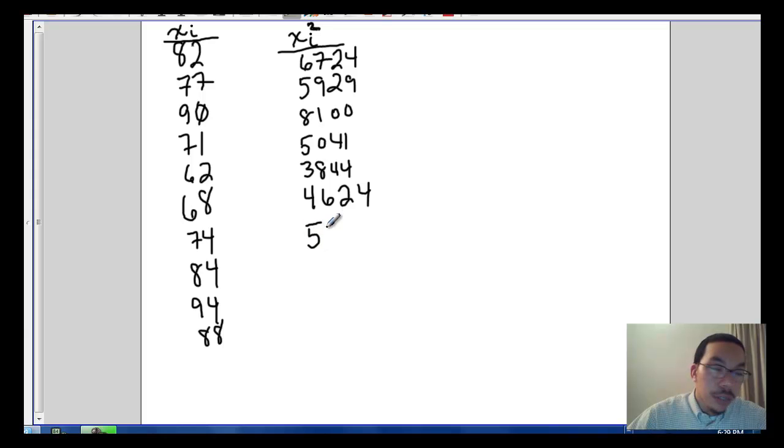74 squared is 5476. 84 squared is 7056. 94 squared is 8836. 88 squared is 7744.